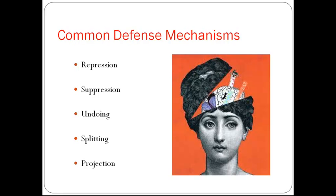Splitting is when one person is labeled good and another is labeled bad. When the good person has not met the patient's needs, that person becomes bad, and someone else is then labeled good. For example, a new patient may take a fond liking to you and talk you up to other staff members, but the minute you disappoint them, they quickly shift to devaluation and despise you. Projection is when the patient blames others for their own shortcomings.